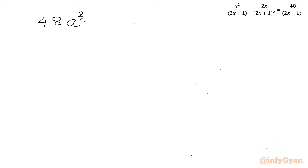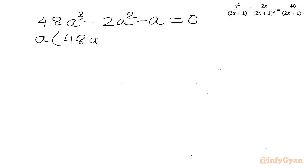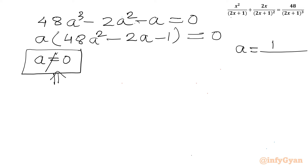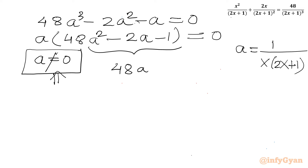Rearranging: 48a³ − 2a² − a = 0. Taking a as a common factor: since a = 0 is not possible for real solutions, we divide through by a and obtain 48a² − 2a − 1 = 0.